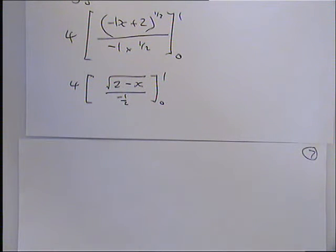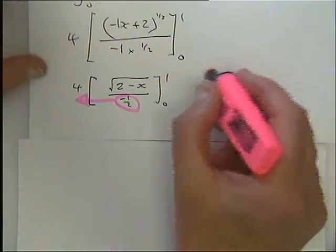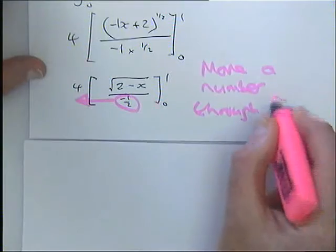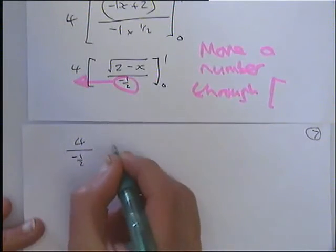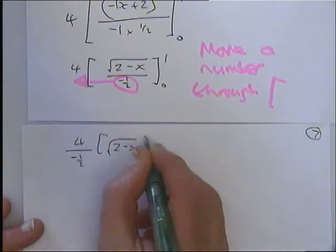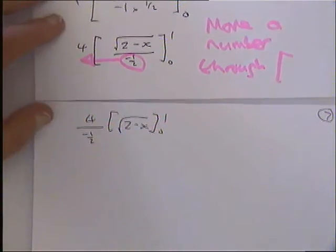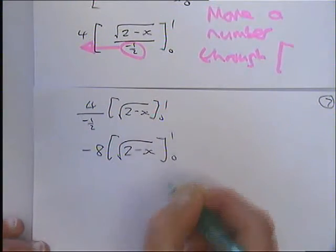We can move something through something here as well. What can we move through where? If it's outside, I'll keep it outside. I can move that's just a number. I can move it through the square brackets as well. So you can also move a number, if it's just a multiplying number, through the square bracket as well. So my next line, I will have 4, and that's on the bottom, divided by minus a half. Then inside here, I've got 2 minus x square rooted between 0 and 1. And what's 4 divided by minus a half? I would say 8. 4 divided by minus a half is minus 8. So you get minus 8, 2 minus x square rooted in the brackets between 1 and 0.